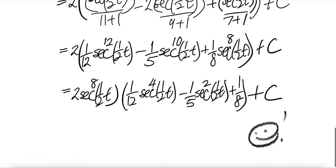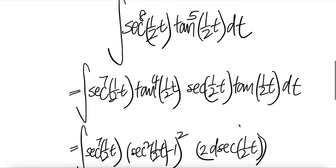And then for this guy, get one over twelve sec to the power four half t. For this guy, one over five sec to the power two half t. And for this guy, one over eight, plus the corresponding constant C.